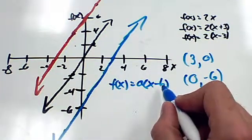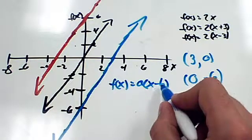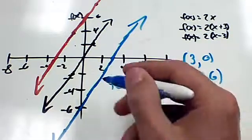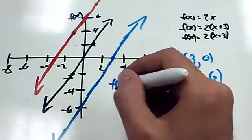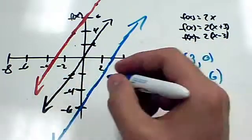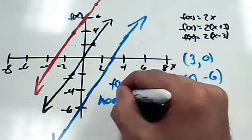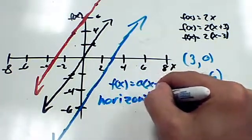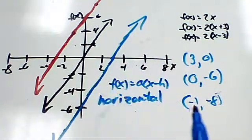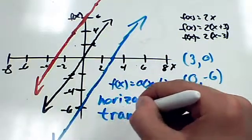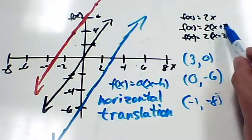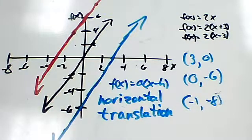And so when we end up subtracting or adding a constant h in this format like so, then we will end up doing a horizontal shift. Notice that we move this horizontally. So you will end up moving it in a horizontal motion. Horizontal shift or translation. I think I used translation last time, so to stay consistent, I'll use it this time as well. So translation. Keep in mind the difference, right? It has to be inside the parentheses.